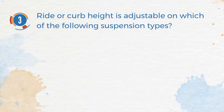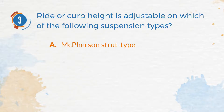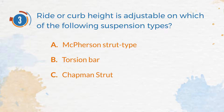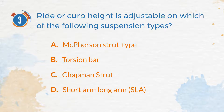Number 3. Right or curb height is adjustable on which of the following suspension types? A. McPherson strut type. B. Torsion bar. C. Chapman strut. D. Short arm-long arm (SLA).